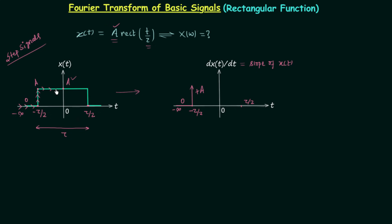Moving forward, the signal value is equal to A from minus tau by 2 to tau by 2, and this line has slope equal to 0, so dxt over dt equals 0 in that interval. After this we have a downward level switching with discontinuity equal to A, so the impulse weight is negative minus A. Then from tau by 2 to plus infinity x(t) equals 0 with slope 0, giving dxt over dt equal to 0. We now have a signal consisting only of impulses.